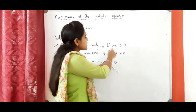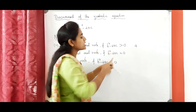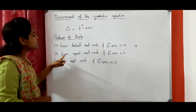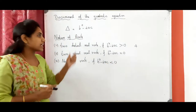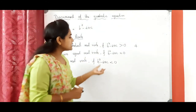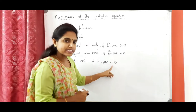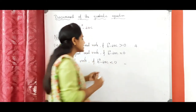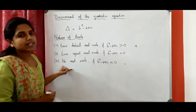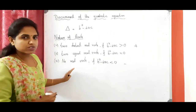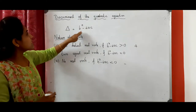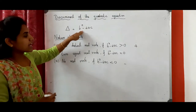Suppose this discriminant value b squared minus 4ac is equal to 0, then the nature of the roots is two equal real roots. Suppose the discriminant b squared minus 4ac is less than 0 — a negative value — then the nature of the roots is no real roots. This is the nature of the roots and the discriminant of the quadratic equation.